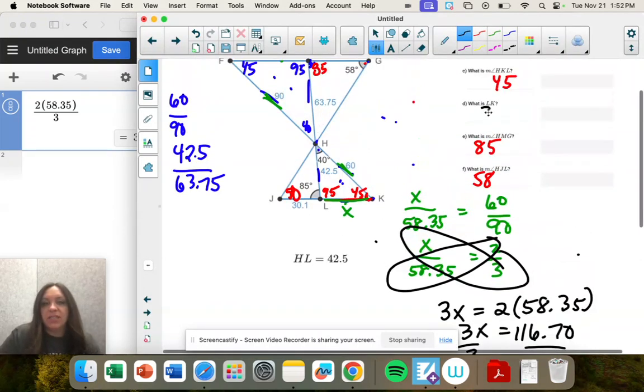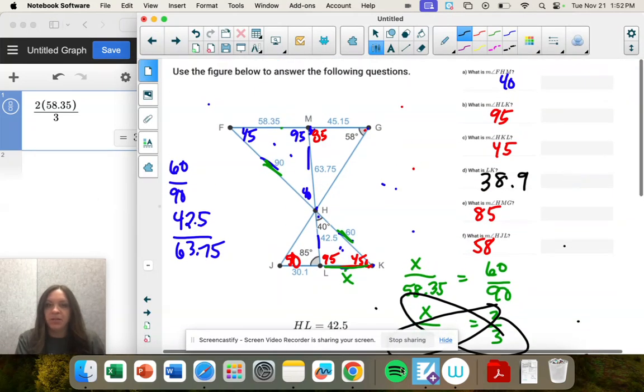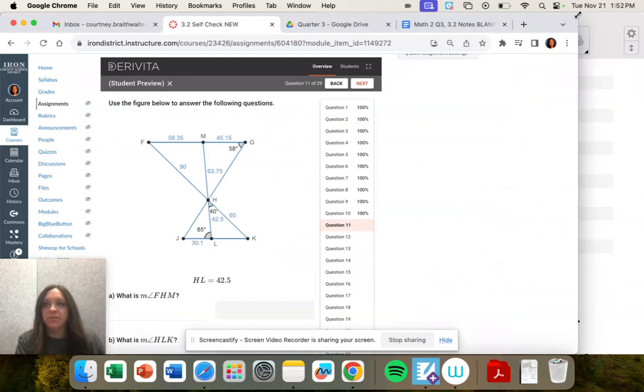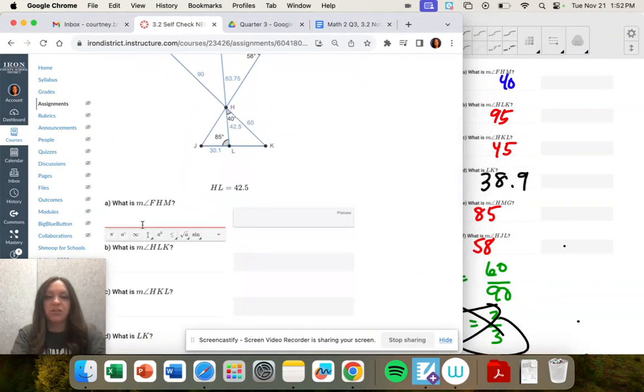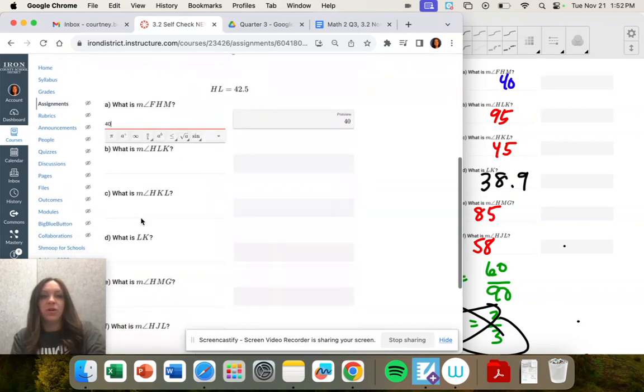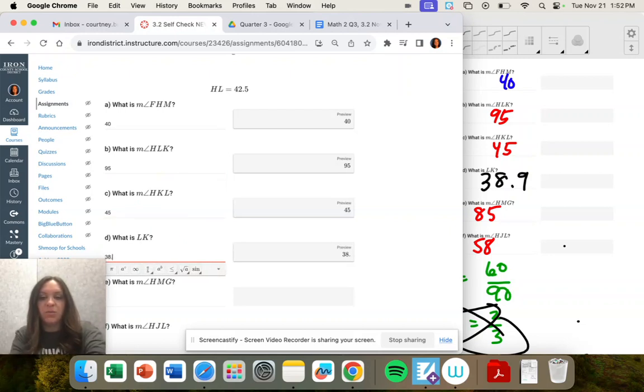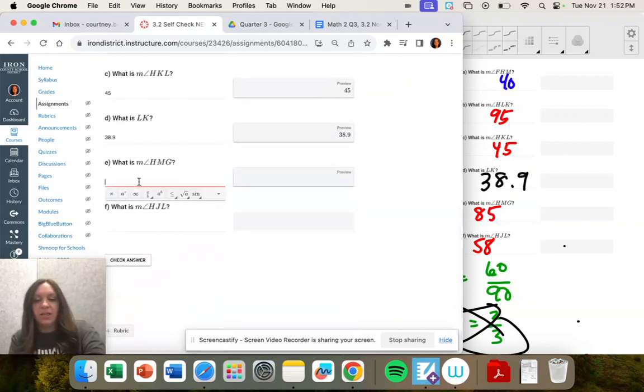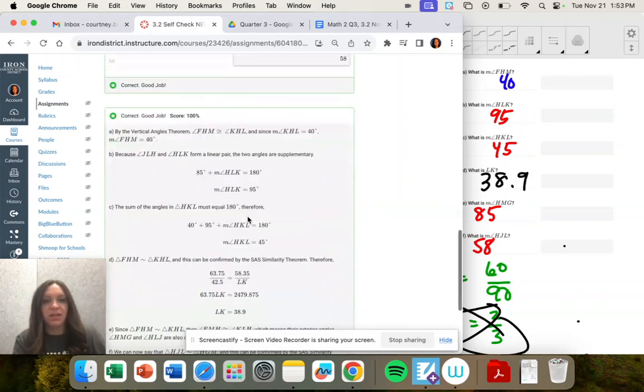And that is my side length. That's X. So now we just have to type everything in. 40. Moving it over so I can see. 40, 95, 45, 38.9. And then down to those angles that we went back to, 58. And they're all good.